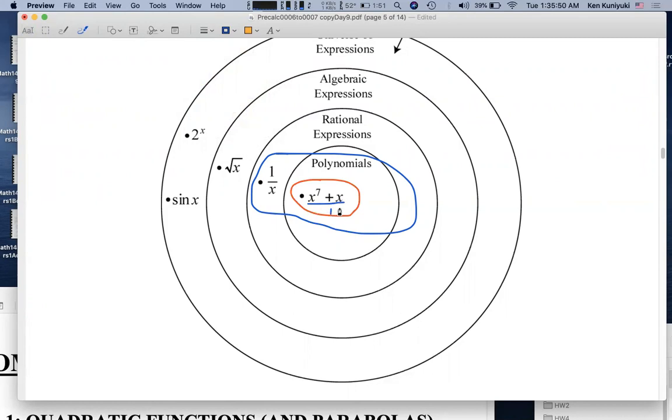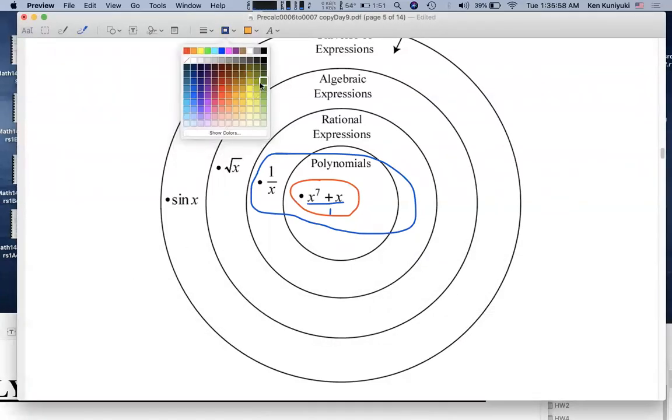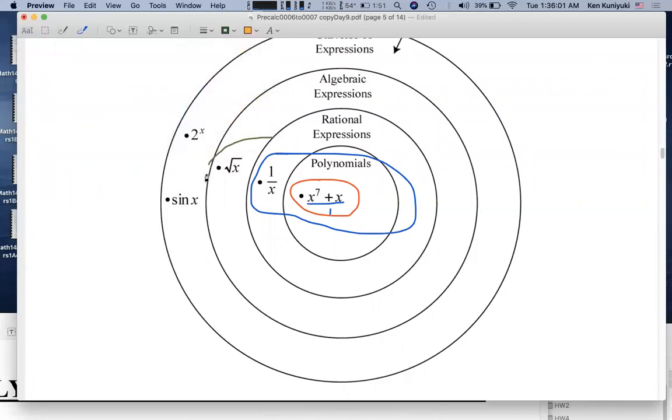The key theme of Chapter 2 is polynomial and rational functions. In fact, by the end of the chapter, in section 2.7, we're even going to discuss the domains of these radical functions. So, we're going to creep into more general algebraic expressions by the end of the chapter.